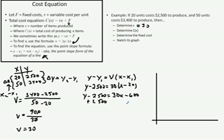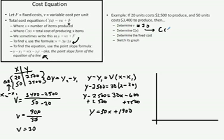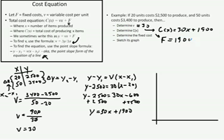We get Y equals 30X plus (2,500 minus 600), which is 1,900. So our cost equation is C of X equals 30X plus 1,900. The fixed cost F is therefore $1,900 — we just matched the variable to the number in the formula.